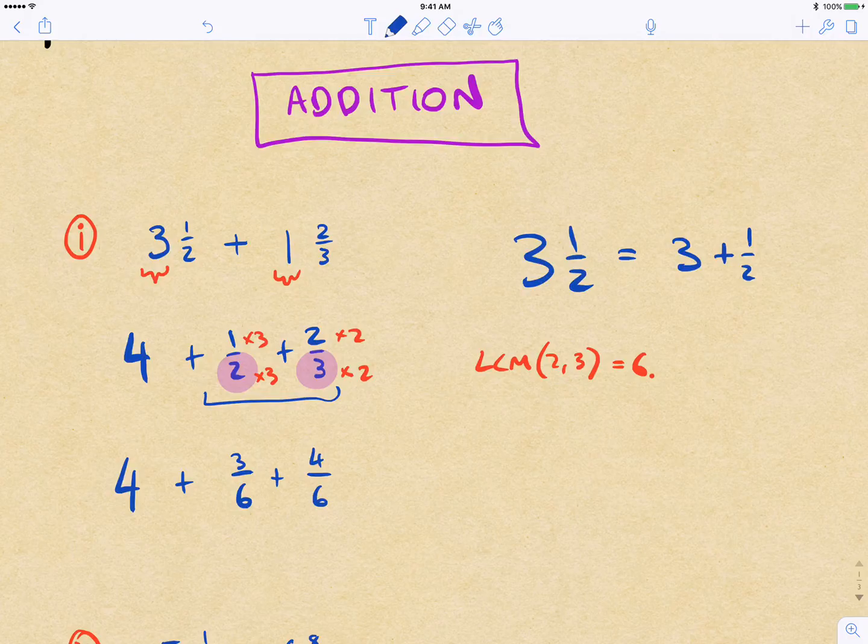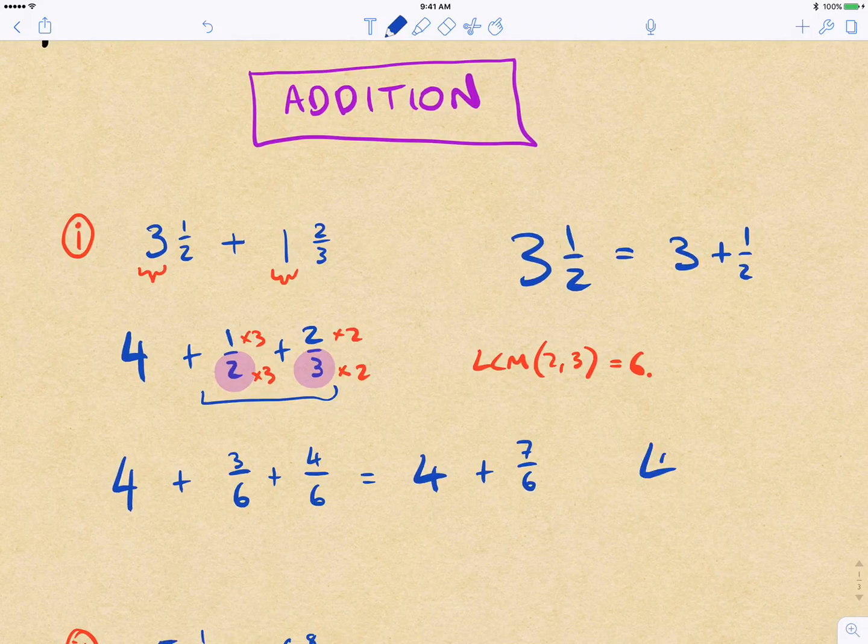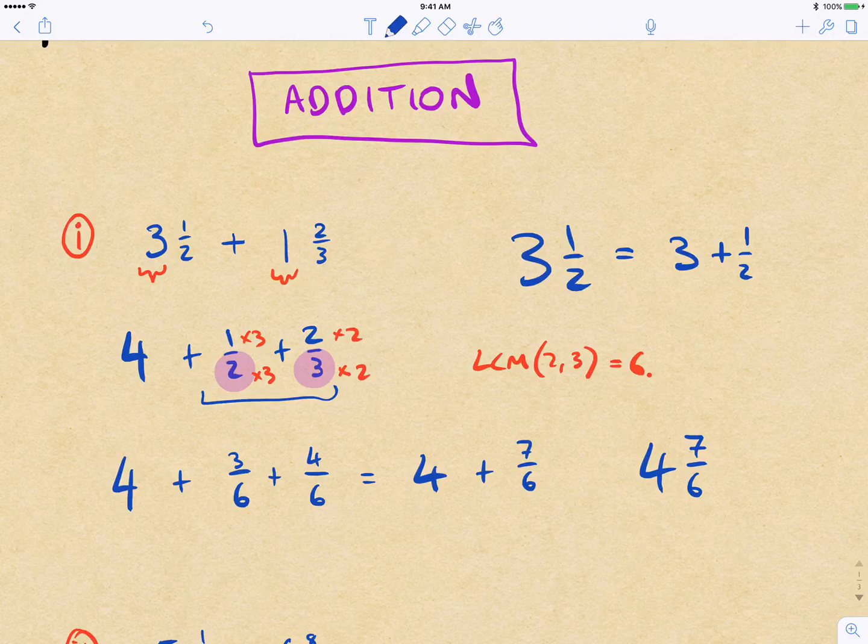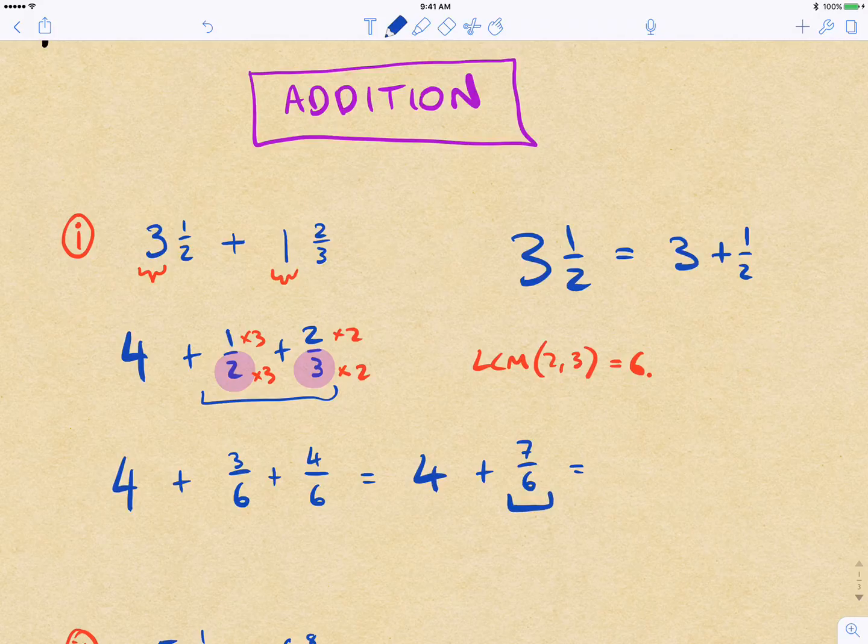Now, when we add these together, we get 4 plus 7 on sixths. But we don't write it as 4 and 7 sixths because with a mixed number, we need the fractional part not to be an improper fraction. So we need the top number, or the numerator, to be smaller than the denominator, the bottom number. So in our next step, what we do is then convert this improper fraction into a mixed number.